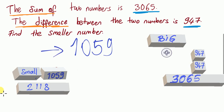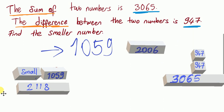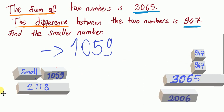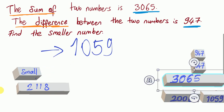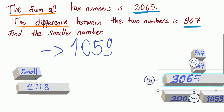Can we find the big number? Yes, because big number plus small number equals 3065. The big number is 2006. We can check: 2006 plus 1059 is equal to 3065.